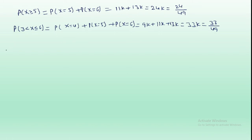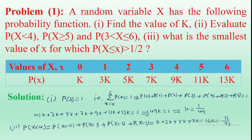Now for the third part: find the smallest value of X for which P(X ≤ x) > 1/2. Since X values are 0 to 6, we use the trial method — substituting various values of X and checking whether the condition is satisfied.